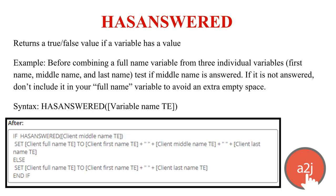HAS ANSWERED is another commonly used function. It returns a true/false value indicating whether a variable holds a value. It's commonly used when building a full name variable — if the user answered a middle name, set full name to first + space + middle + space + last; otherwise, set it to first + space + last. Without this condition, an extra space would appear if middle name was missing. You can use HAS ANSWERED in other situations wherever you need to test whether a variable holds a value.